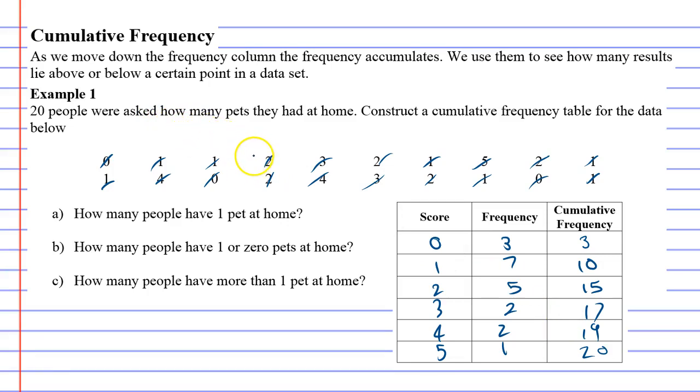We start to understand why we do this when we answer these questions. Question A says, how many people have one pet at home? That one's quite simple. There are seven people with one pet at home. We just look at the frequency for this one.